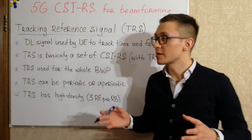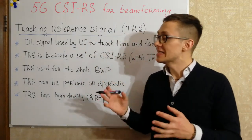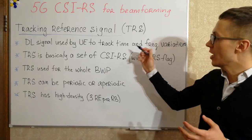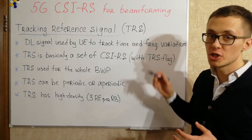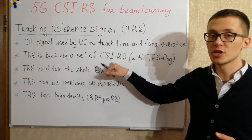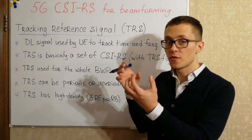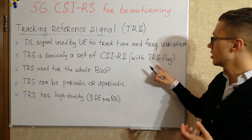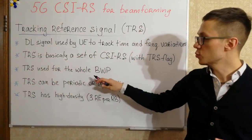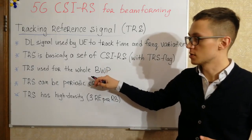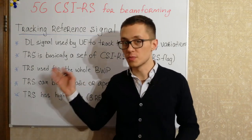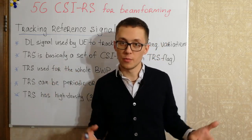Now let's talk about the tracking reference signal, TRS. TRS is a downlink signal that can be used by user equipment to track and estimate time and frequency variations for the radio channel. TRS is essentially a set of channel state information reference signals — just a set of CSI-RS with a special configuration and a special TRS flag in its parameters. TRS can be used for the whole bandwidth part, which answers the question of why we don't use demodulation reference signals for channel state information acquisition — because DMRS are connected to SSB blocks or to data and control channels, while CSI-RS and TRS are allocated to the whole bandwidth part.